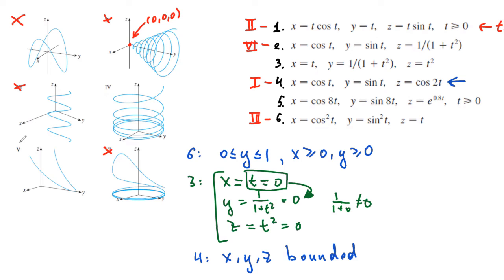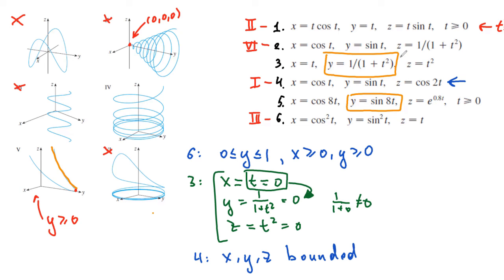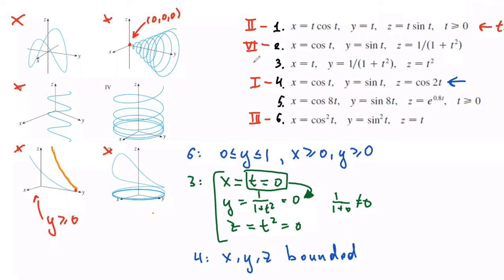Finally, we're left with two graphs and need to figure out which equation each corresponds to. For the graph where y is strictly bigger than or equal to 0 — when a branch gets bigger and bigger it stays on the positive side of y — we need to choose between y = sin t and the other expression. The expression in equation 3 is strictly bigger than 0, while y in equation 5 can be positive or negative. So graph number 5 corresponds to equation 3, and graph number 4 corresponds to equation 5, because z is always positive there.